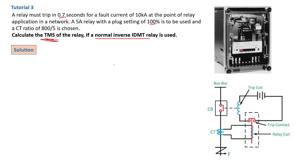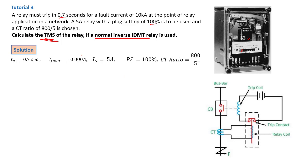It is important to establish the parameters we have. We have ta — the actual tripping time of 0.7 seconds. We have the fault current of 10 kilo-amps (10,000 amps), the nominal current for the CT secondary at 5 amps, plug settings at a tapping of 100, and a CT ratio chosen to be 800 over 5.